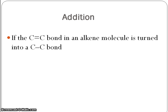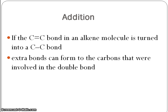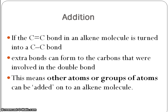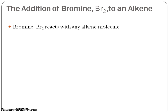We're looking at the addition reaction, where the carbon-to-carbon double bond found in all alkenes — that's the functional group — is turned into a single bond between two carbons. When this happens, new bonds can be formed and other atoms or groups of atoms can be added on to the molecule.